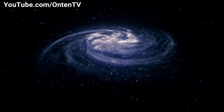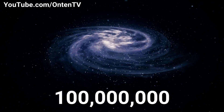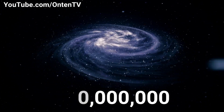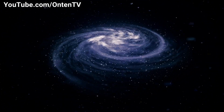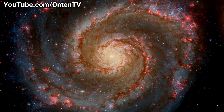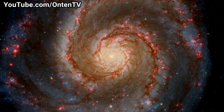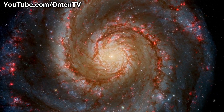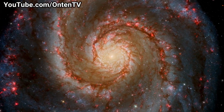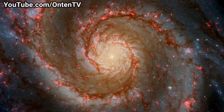Dwarf galaxies have around 100 million stars in them and are usually found around a bigger galaxy. After dwarf galaxies, we have the medium galaxies, and one of those is the Milky Way galaxy, which is the one we're located in.